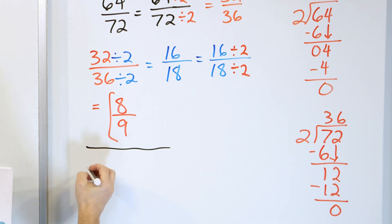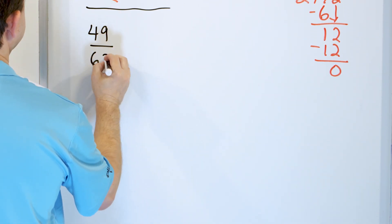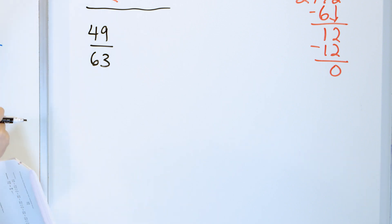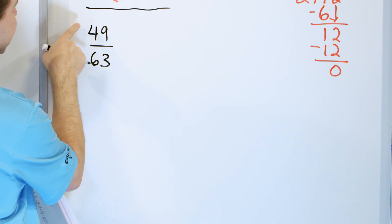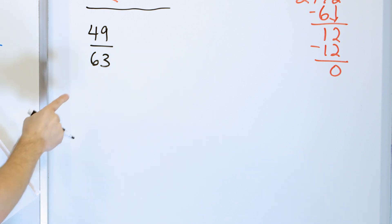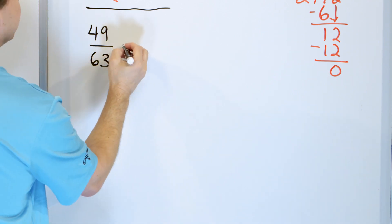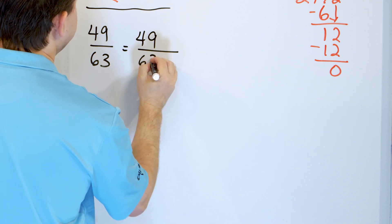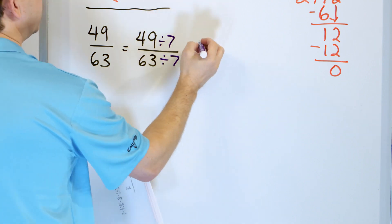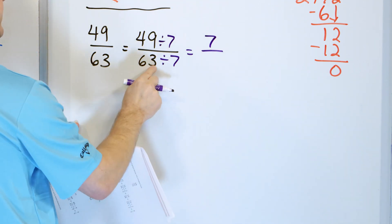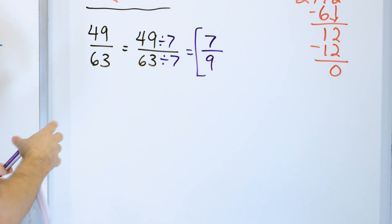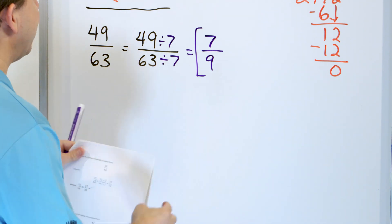Problem 7: 49/63. This one looks different. You might think to divide by 3, but think through your multiplication tables: 7 times 7 is 49, and 9 times 7 is 63. So I can divide both by 7. It might take some time to figure that out, but that's what we need to do. 49 divided by 7 is 7, and 63 divided by 7 is 9. The answer is 7/9, and it's fully simplified.